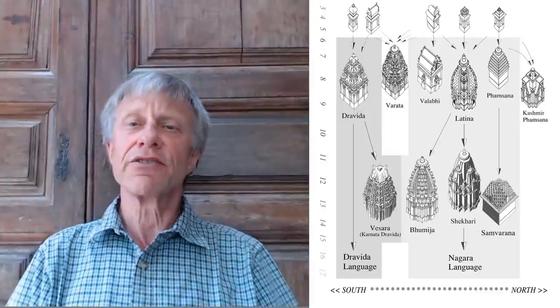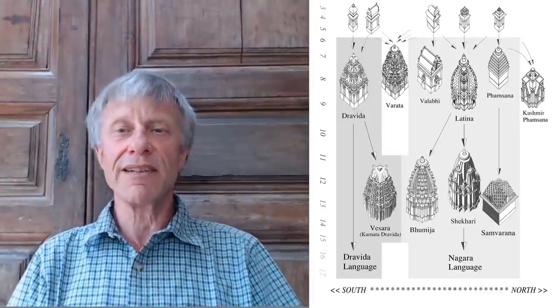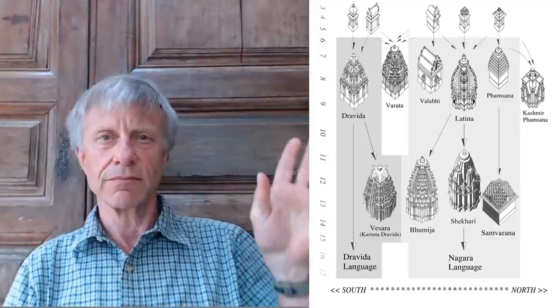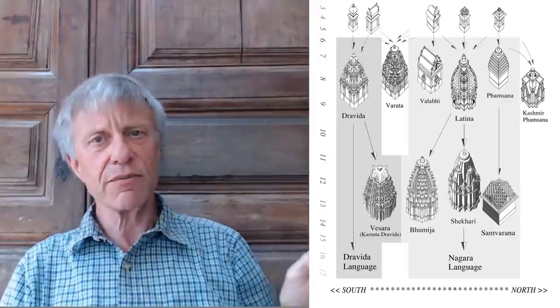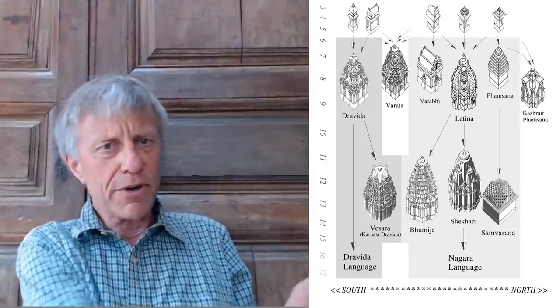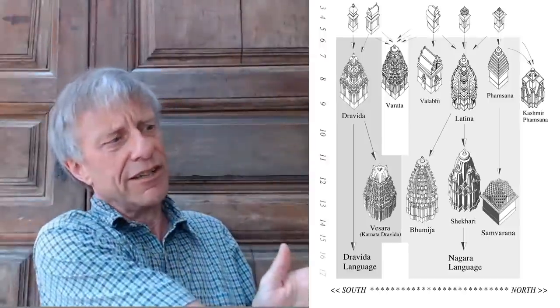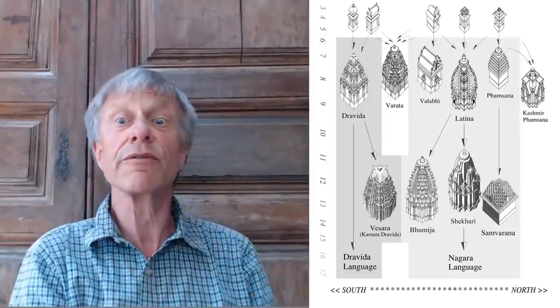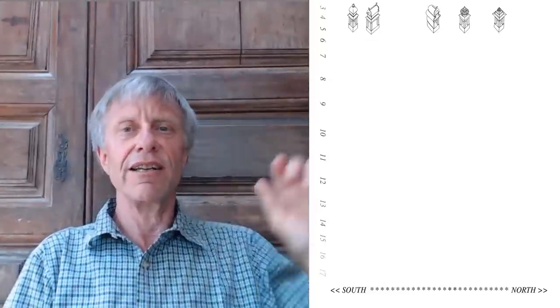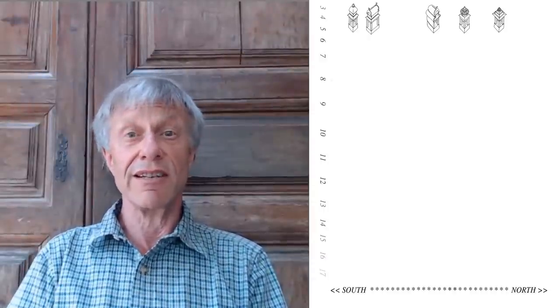The diagram shows all the main temple forms I'm going to talk about in the rest of this lecture. Down the side we have the centuries; along the bottom, geographically going south to north; and along the top, those five early wooden shrine forms which are the seeds of all later temple architecture.